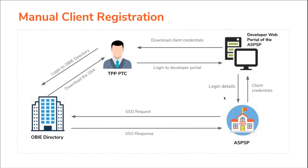First in the flow, the primary technical contact of the TPP should log into the OBIE directory and register as PISP, AISP, or CBPII and download the SSA. Then the TPP will login to the developer portal of the ASPSP. After login to the developer web portal, the ASPSP will send an SSO request to the OBIE directory where the TPP will be redirected to the OBIE login. Upon successful login, the ASPSP will receive the SSO response and will send a client credential response to the TPP.